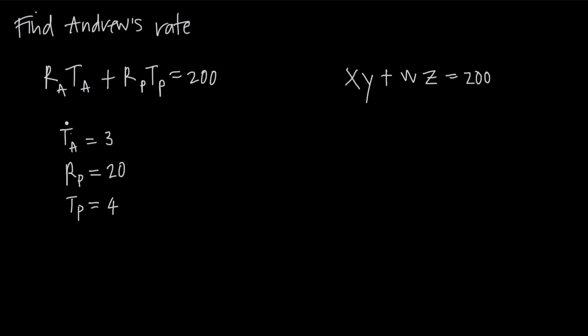Knowing that Andrew's time is 3 hours, we need to plug 3 in for t sub a. So we're going to get r sub a times 3. Then we're going to add r sub p. We know that Peter's rate is 20, so we'll plug in 20. And then we have to multiply that by Peter's time. We've been told that t sub p, Peter's time, is 4 hours. So we'll plug in 4 for t sub p. And that's all equal to 200.